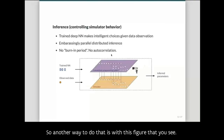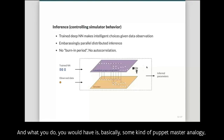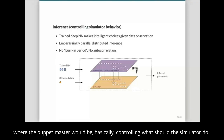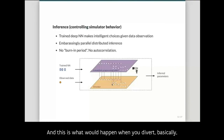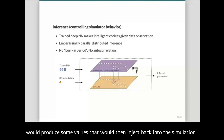Another way to visualize this: in orange you have the original simulator, and on top you have the probabilistic programming system controlled by the neural network — a puppet master analogy where the neural network controls what the simulator does, diverting calls to the random number generators and injecting values back into the simulation.